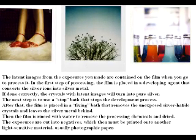The latent images from the exposures you made are contained on the film when you go to process it. In the first step of processing, the film is placed in a developing agent that converts the silver ions into silver metal. If done correctly, the crystals with latent images will turn them into pure silver.